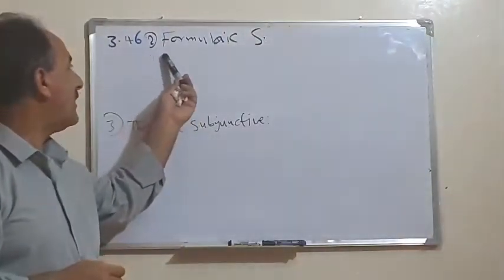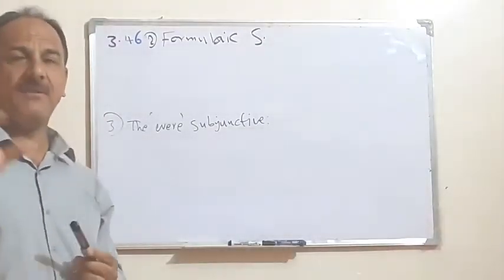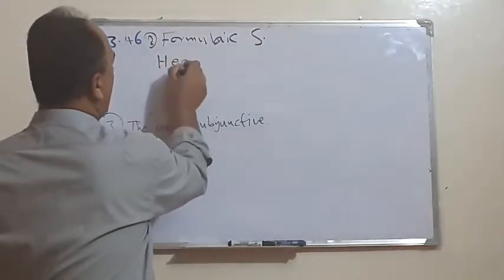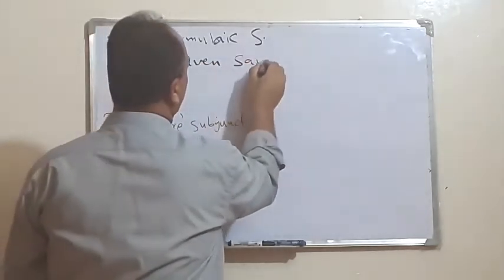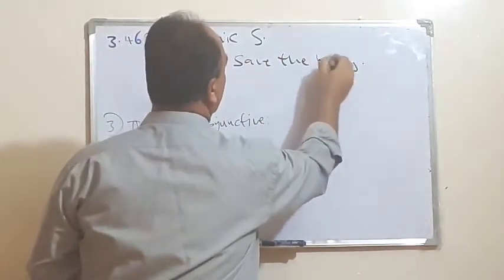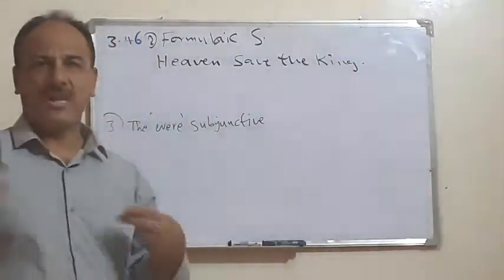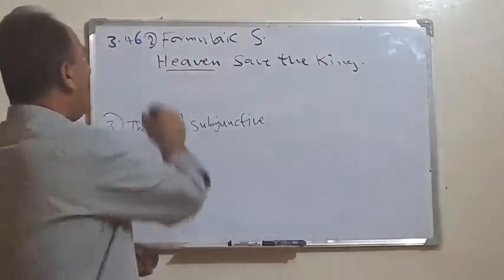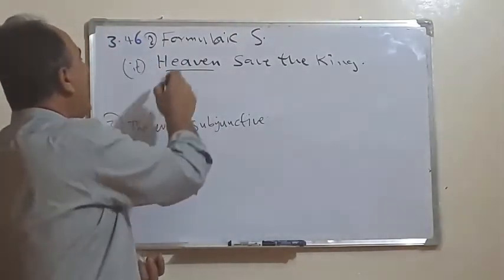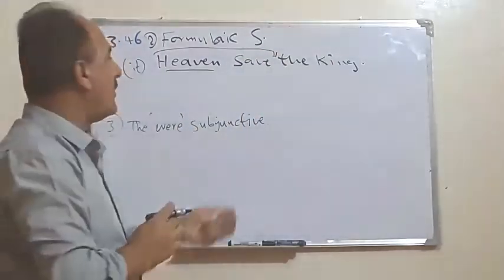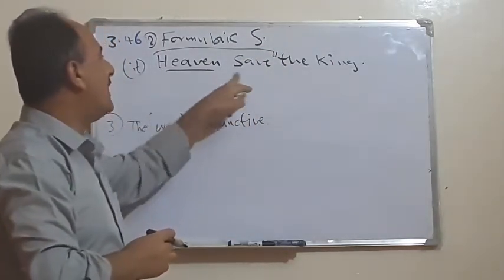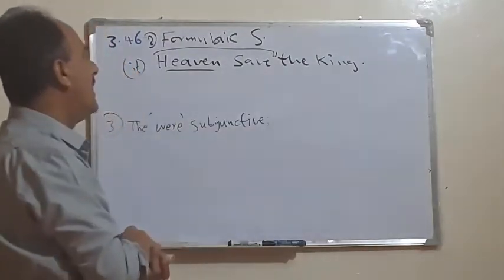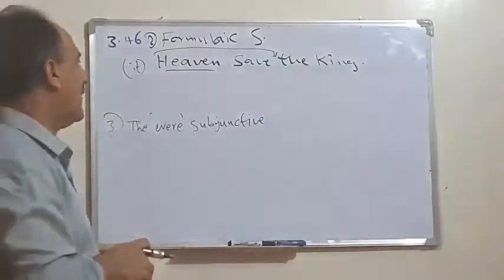The second type of subjunctive is called formulaic subjunctive, which means we have a limited form that we do not change. For example, 'God save the king or queen.' This is like a wish or a prayer. There is no concord here — if we removed 'God' and used 'it,' we would have to add 's' for the third person singular, but we say 'save,' not 'saves.'